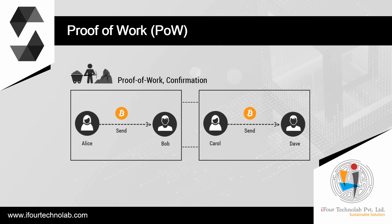Proof of work is the original consensus algorithm in a blockchain network. This algorithm is used to confirm transactions and produce new blocks to the chain. With proof of work, miners compete against each other to complete transactions on the network and get rewarded. In a network, users send each other digital tokens. A decentralized ledger gathers all the transactions into blocks. Care should be taken to confirm the transactions and arrange blocks — this responsibility bears on special nodes called miners, and the process is called mining.